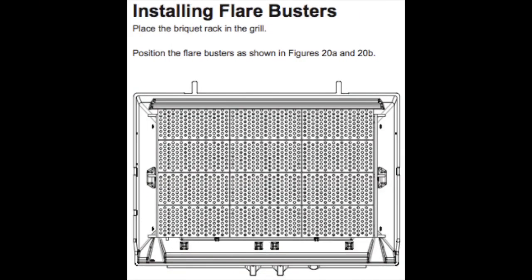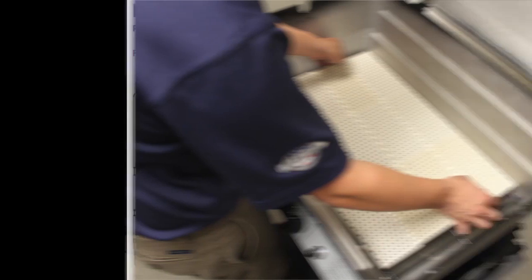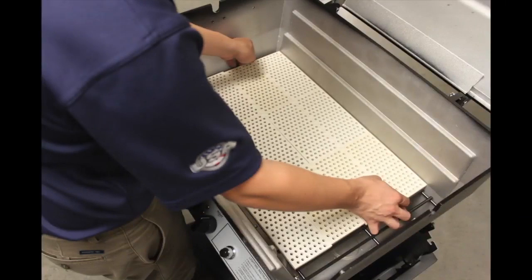Set the briquette rack into the grill casting. Place the flare buster ceramic plaques onto the rack, leaving very little space.